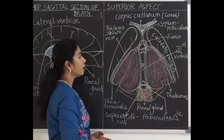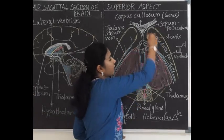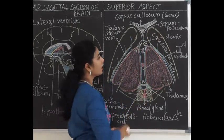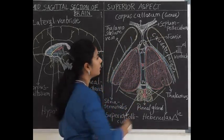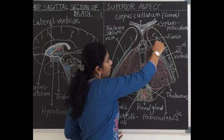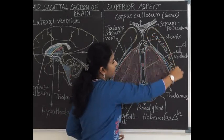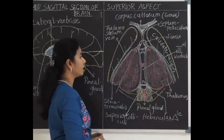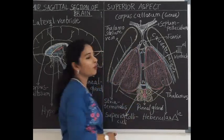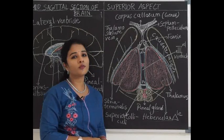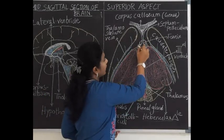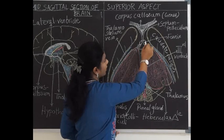The caudate nucleus is a part of the basal nuclei or basal ganglia present within the white matter of the brain. The head of the caudate nucleus continues as the body and tail of the caudate nucleus. The anterior end of the thalamus forms the boundary of the interventricular foramen of Monro and is related to the columns of the fornix.